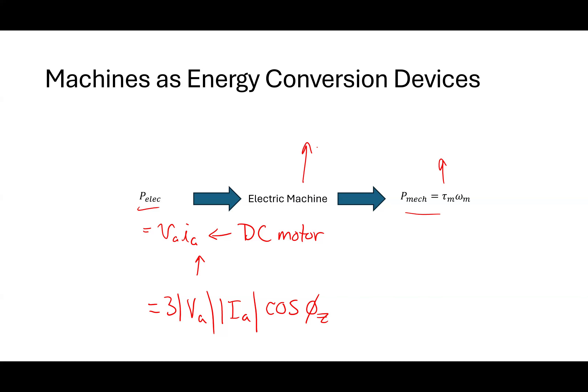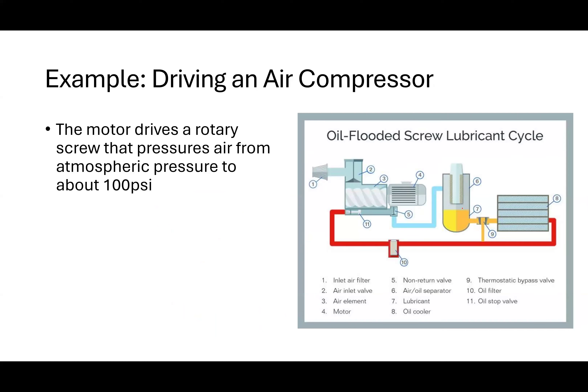Typically there is some efficiency to a motor. This one-horsepower motor is probably not particularly efficient, but if I get a large enough motor — usually 10 horsepower or more — I might see 95% efficiency. So if I'm delivering 10 horsepower at the shaft, the input power would be one divided by 0.95 times that. Where would you be losing power? At least two reasons: friction on the shaft and bearings, and resistance inside the machine — currents have to flow inside of it.